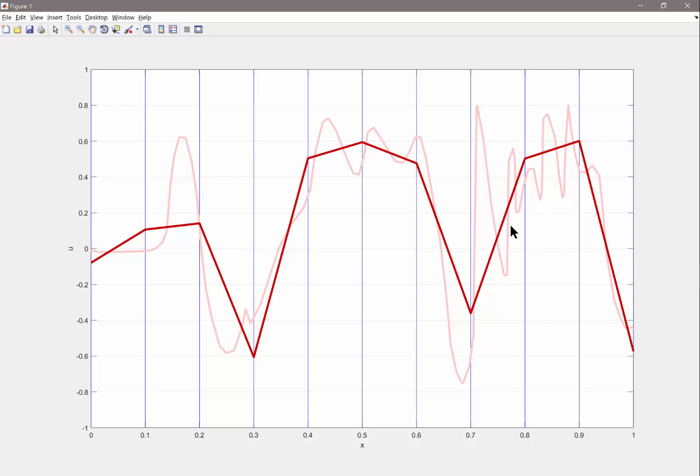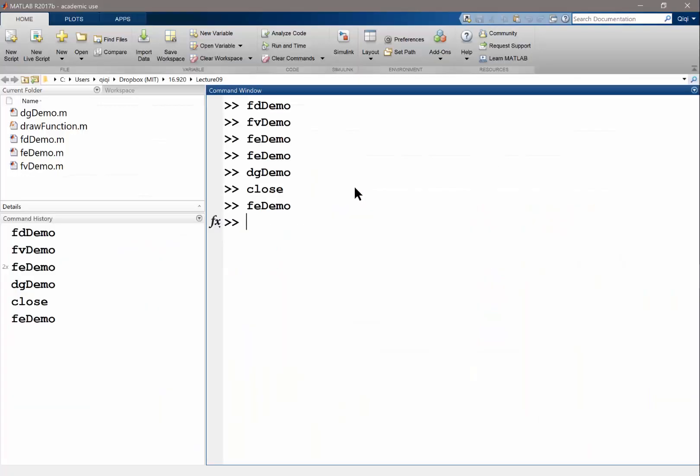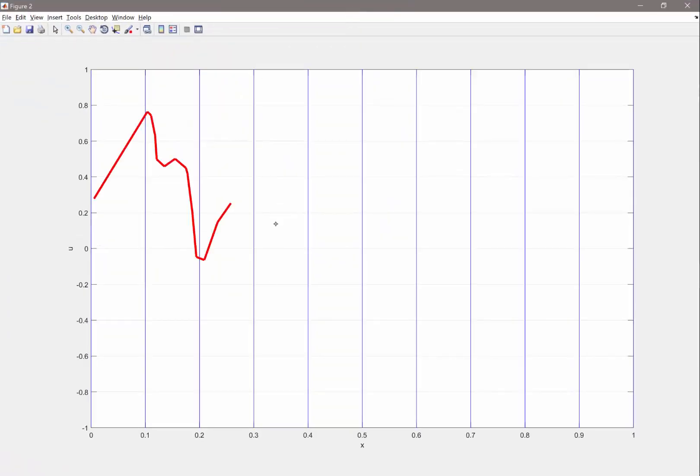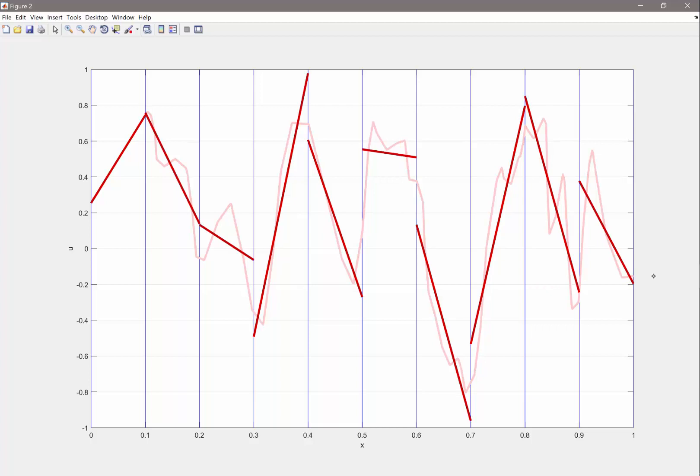Can somebody point out what's the difference between this and the example I showed just now? Both are finite elements. This also looks like piecewise straight lines, right? But what's the difference between this and that? Yes? This one's discontinuous.